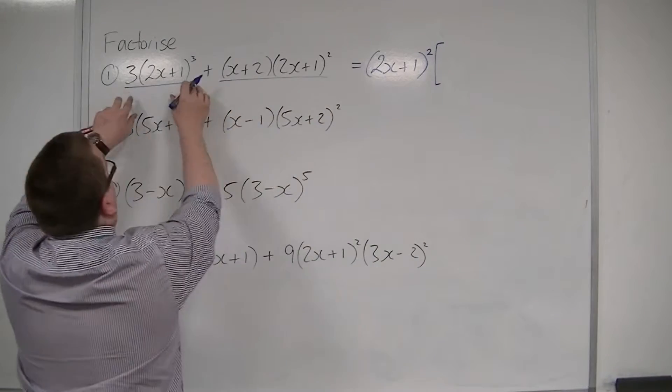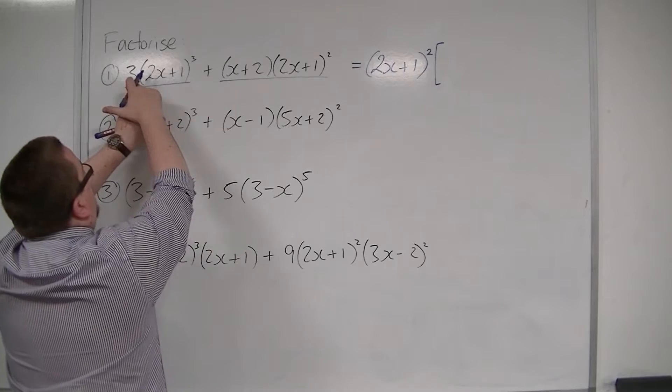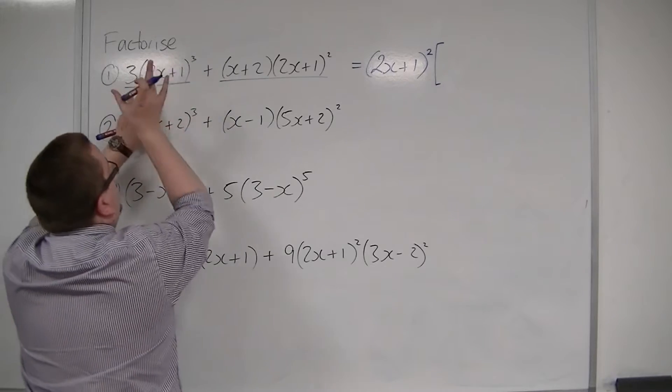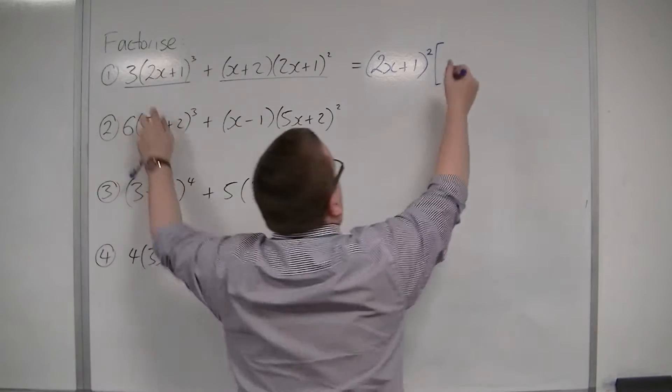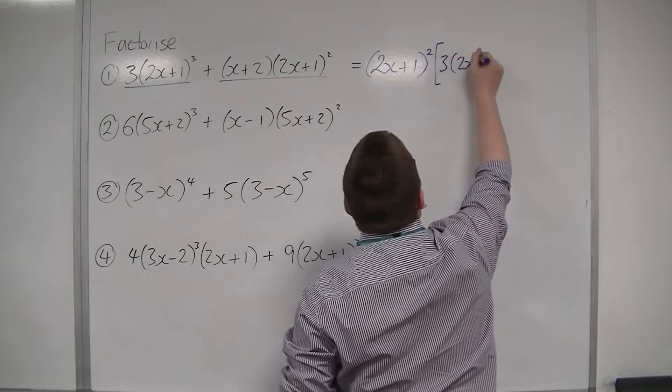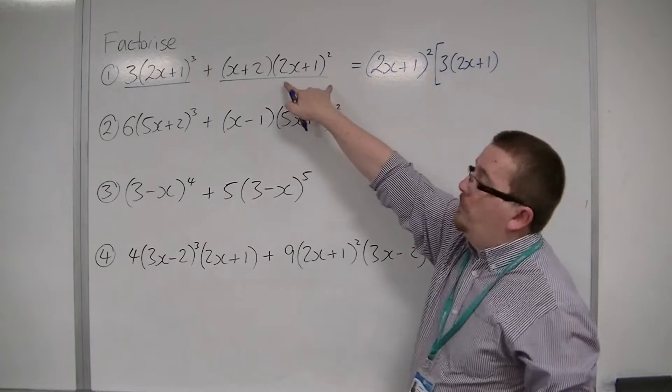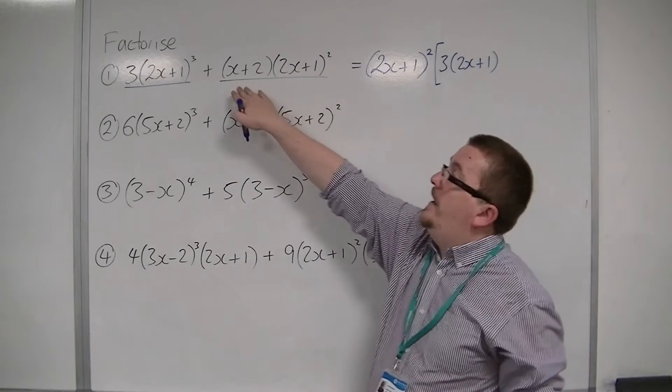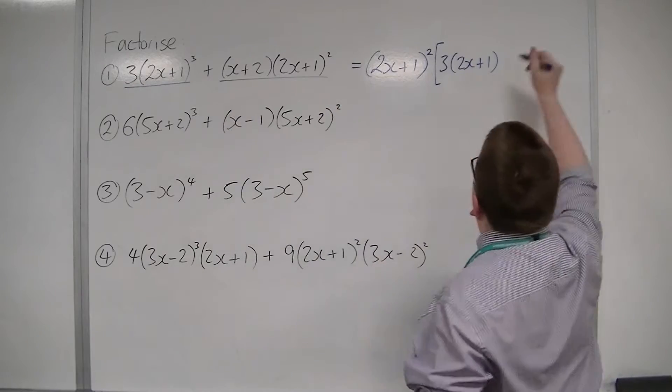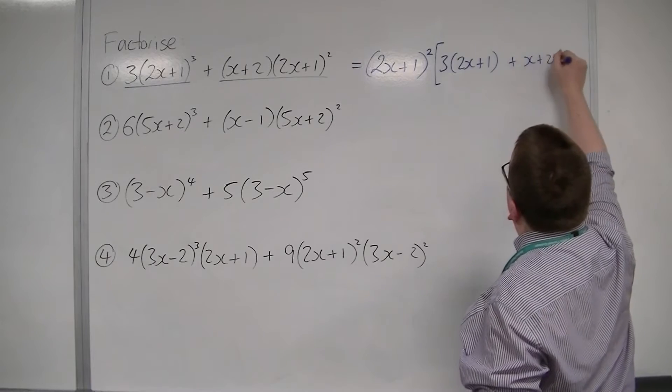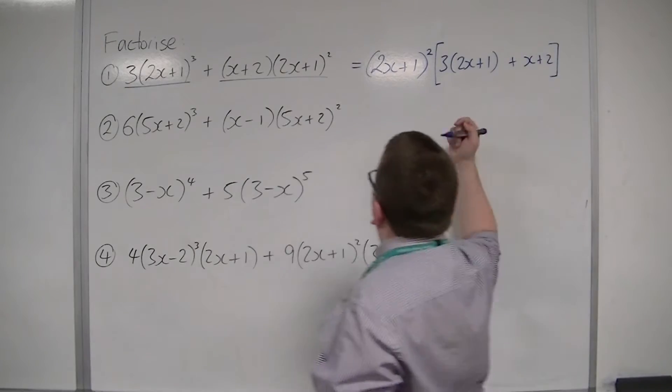Then, I'm going to have a larger bracket. 2x plus 1 squared has been pulled out and what's going to be left here is the three and one of the remaining 2x plus 1 brackets. So, three lots of 2x plus 1. And here, if I've pulled the 2x plus 1 squared out, I'm going to have left just that x plus 2.